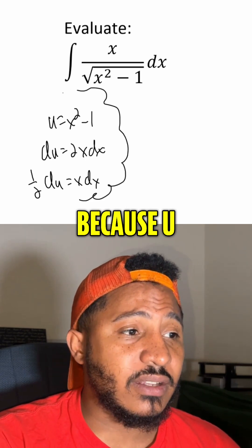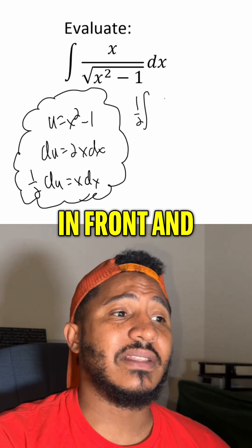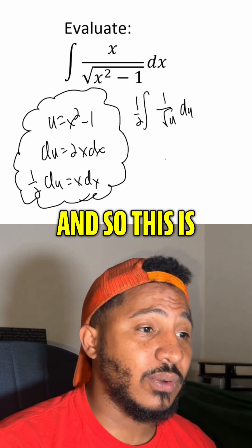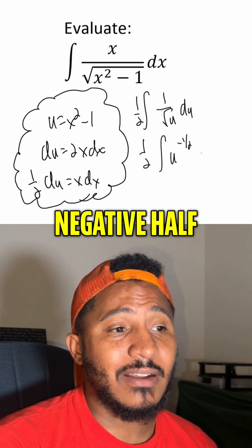Now it's a lot easier integral to integrate because we already know u subs. We can pull that 1 half out in front, and this is just 1 over the square root of u du. We can write that as just a power. So this is half the integral of u to the negative half du.